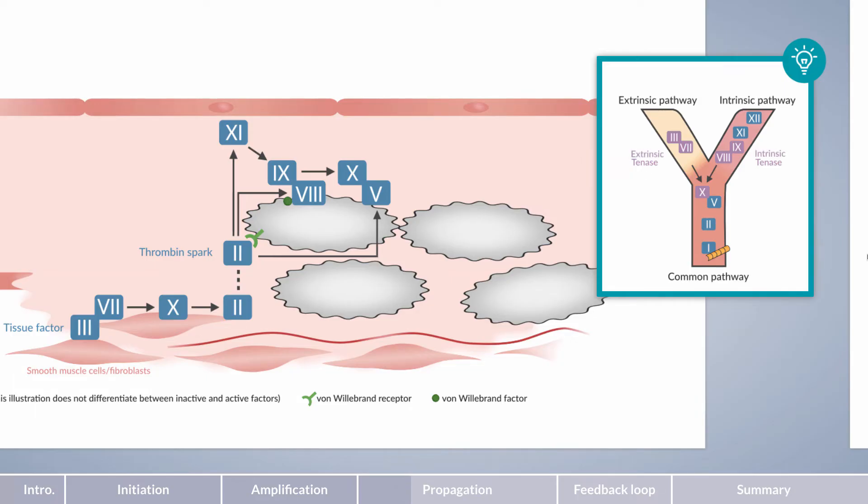Don't worry if things appear a little complicated. It's actually quite easy. Extrinsic tenase contains factors III and VII and is present on smooth muscle cells and fibroblasts of the vessel wall. Intrinsic tenase contains factors IX and VIII and is present on the platelet surface.